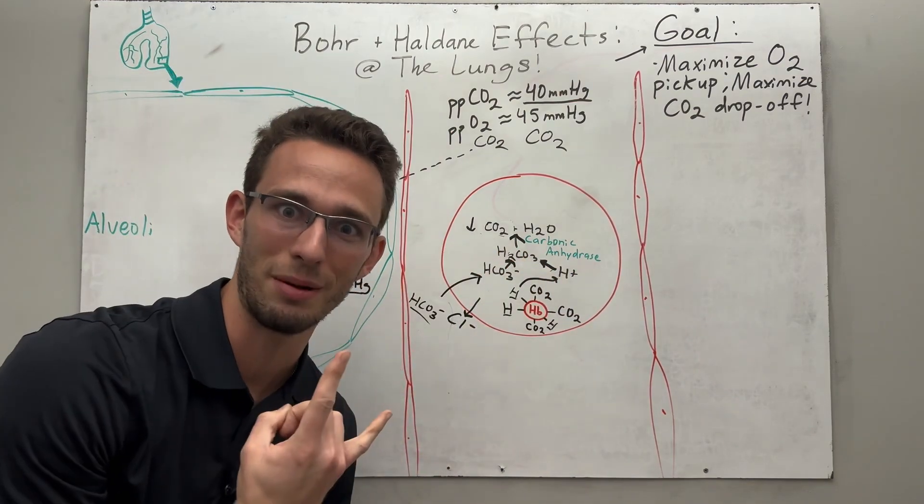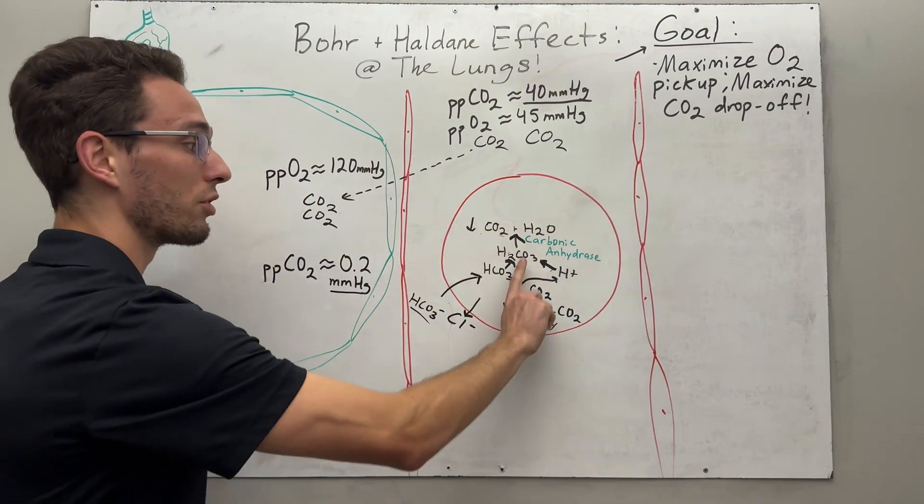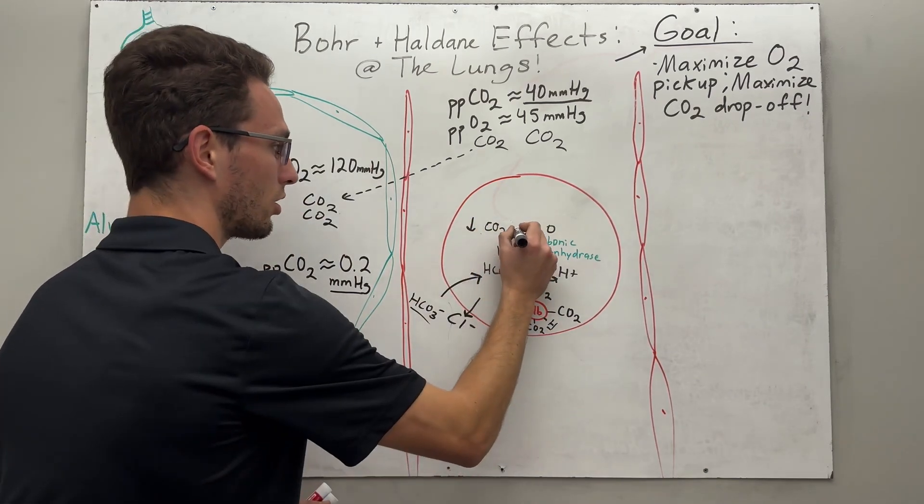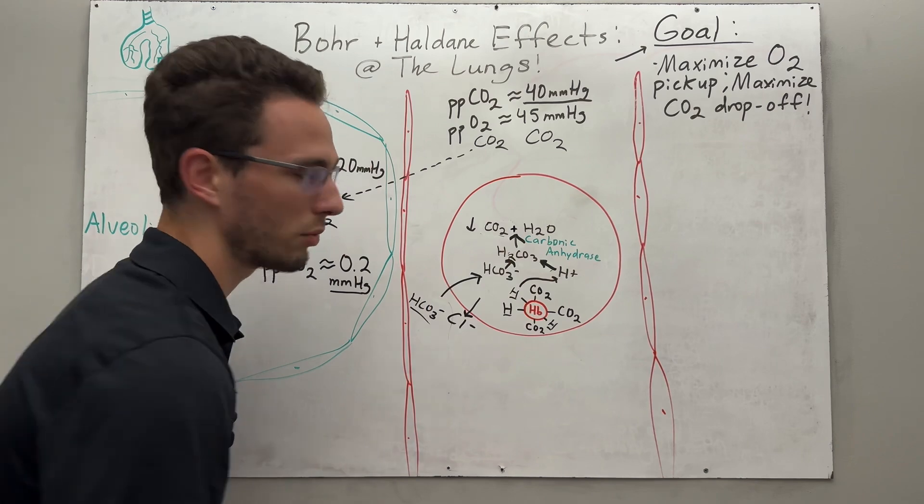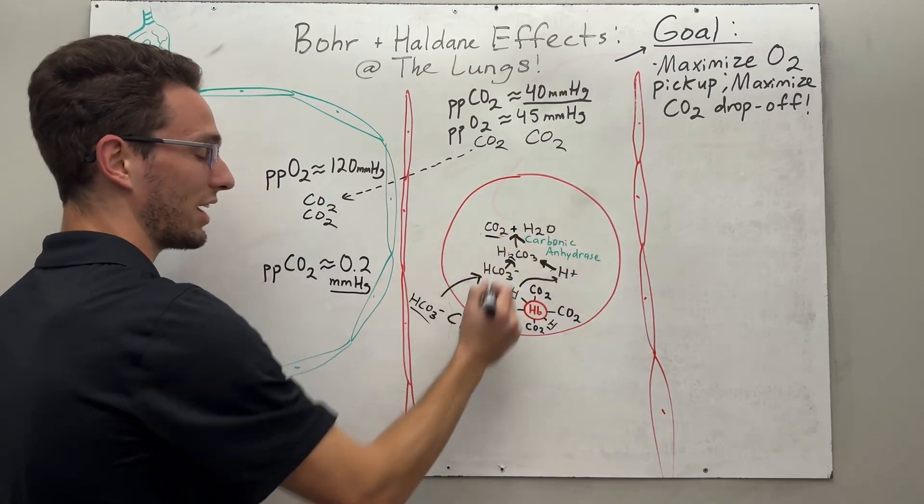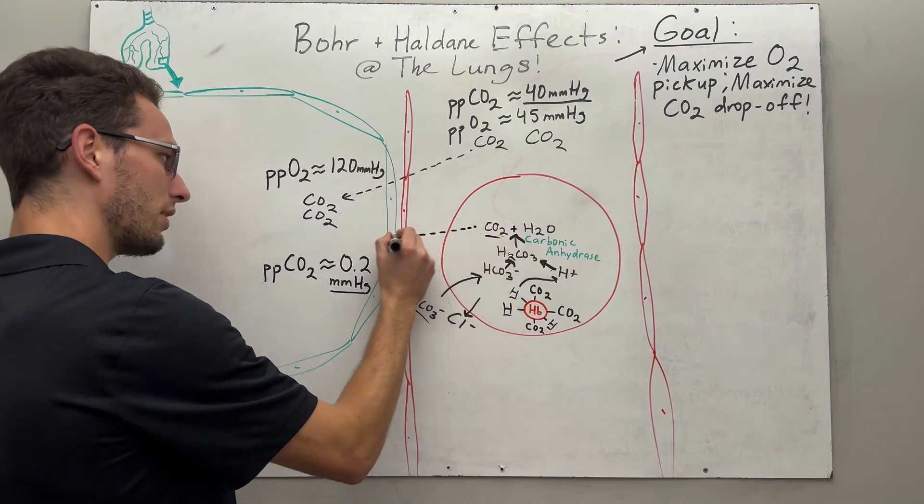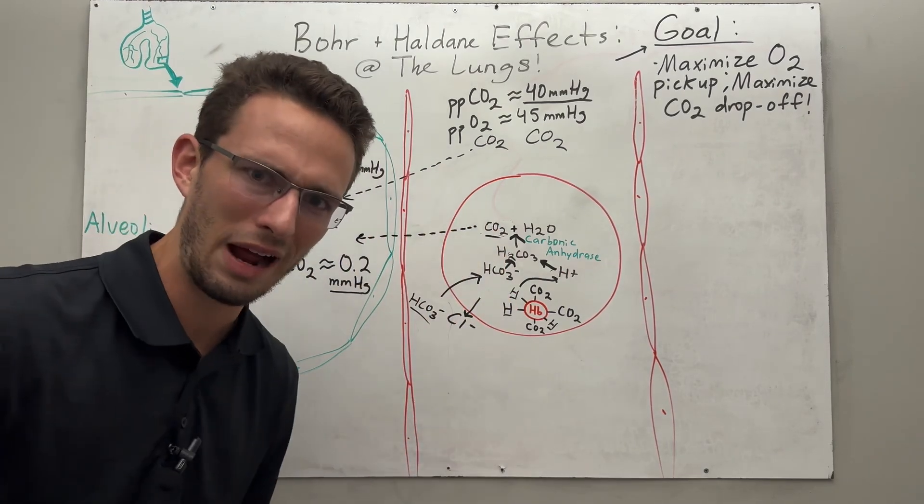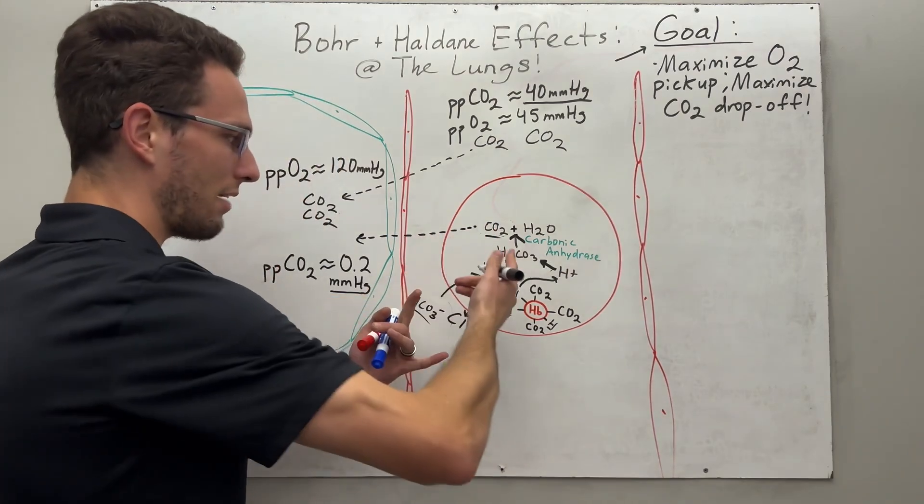And carbonic anhydrase flips the script. Instead of pushing it that way, it'll force it this way, creating carbon dioxide and water. So it's interesting now, since we've made carbon dioxide and water, now whatever carbon dioxide just got freed will actually leave into the alveoli. How fascinating, right? So we flipped everything.